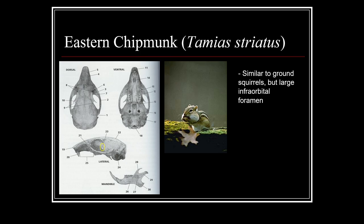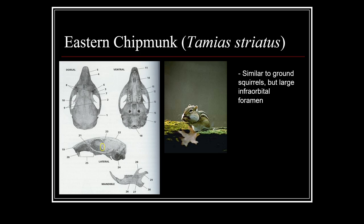When looking at Sciuridae skulls, there are two primary things to look for: the notch present above the orbital, which varies a little between species, and variation in the post-orbitals. There's also a canal with differences between Sciuridae species. Many share similar dental formulas, but there are some dentition differences between species. Those are the main things to focus on when telling squirrel skulls apart.